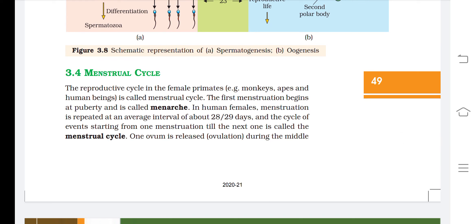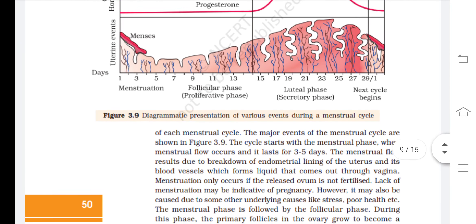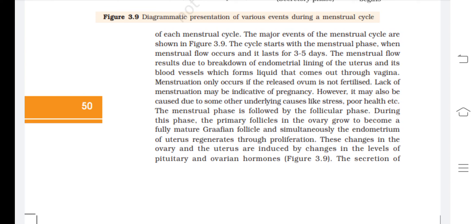The reproductive cycle in female primates — monkeys, apes, and human beings — is called the menstrual cycle. The first menstruation begins at puberty and is called menarche. In human females, menstruation is repeated at an average interval of about 28 to 29 days. The cycle of events from one menstruation to the next is called the menstrual cycle, and one ovum is released during the middle of each cycle.